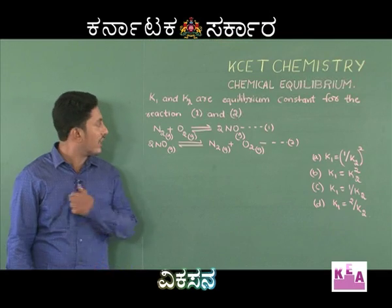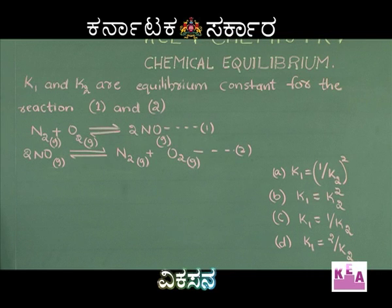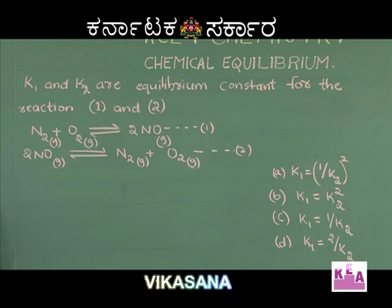The next question: K1 and K2 are equilibrium constants for reactions 1 and 2. Equation 1 is N2 + O2 giving 2NO. Equation 2 is 2NO giving N2 + O2. The options are: Option A, K1 = 1/K2²; Option B, K1 = K2²; Option C, K1 = 1/K2; Option D, K1 = 2/K2.